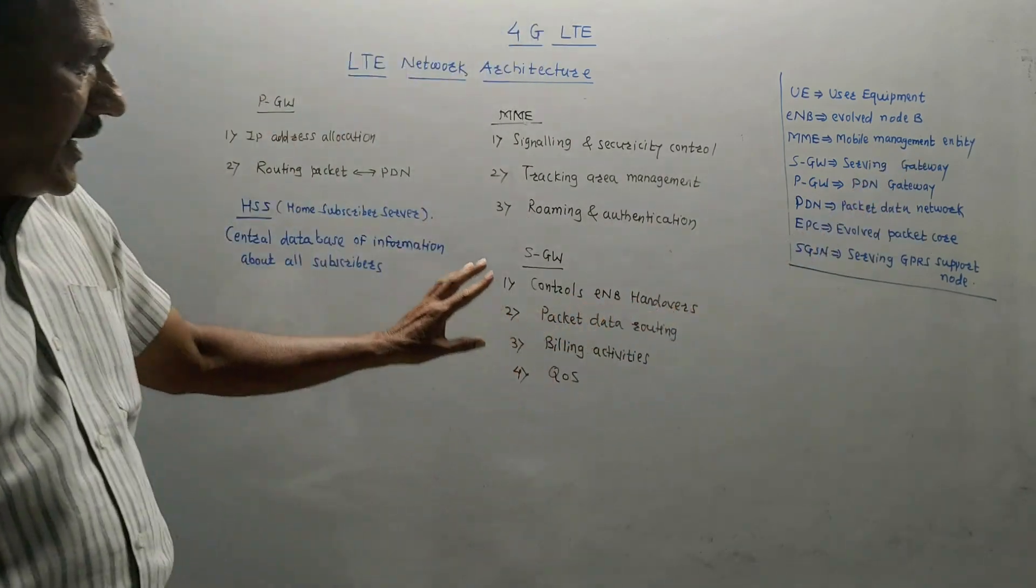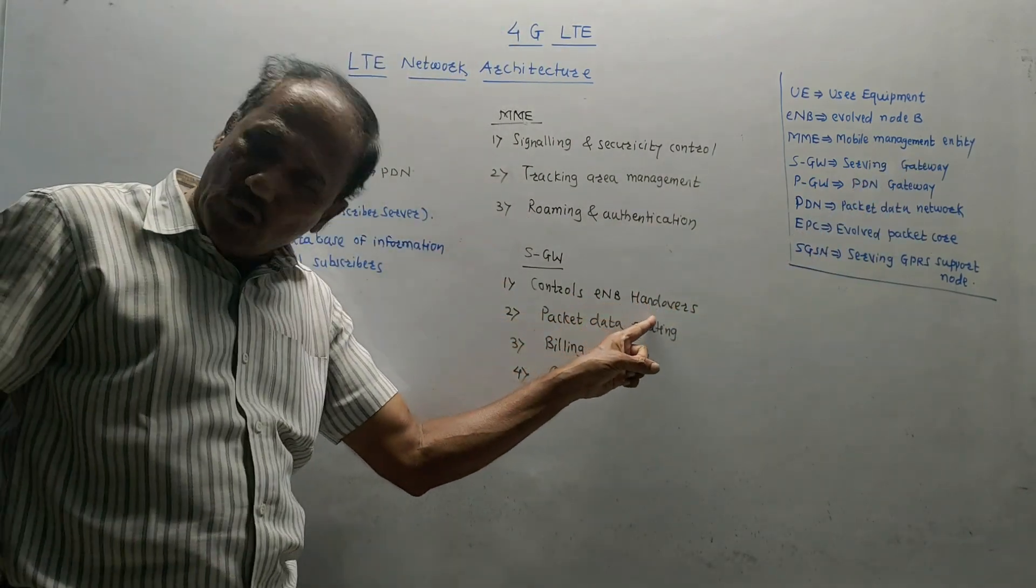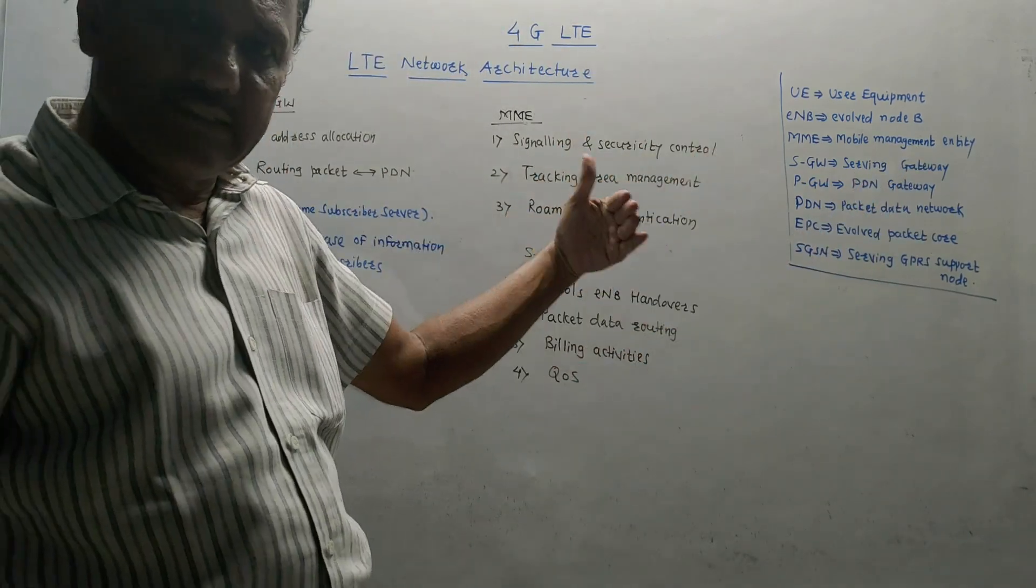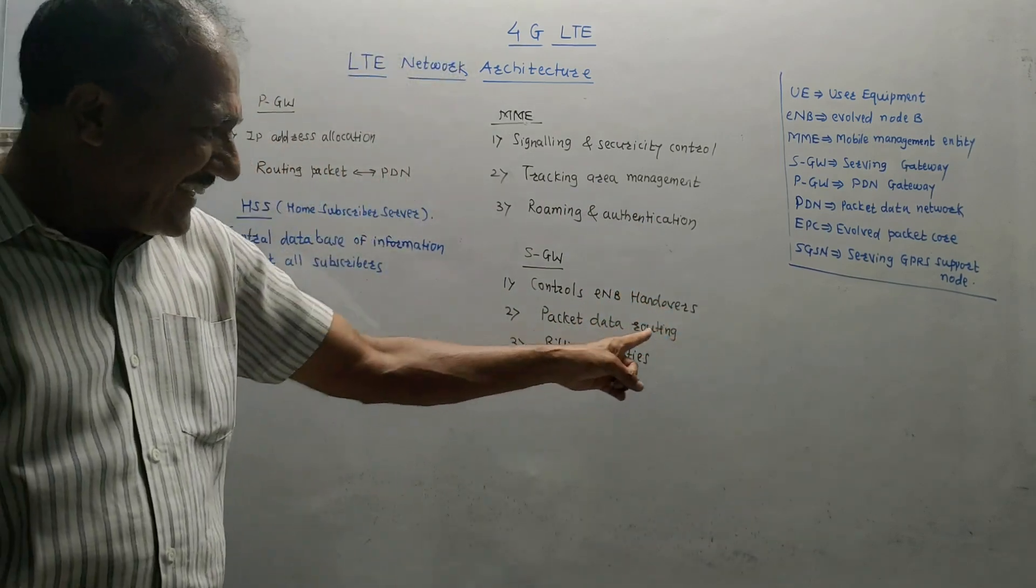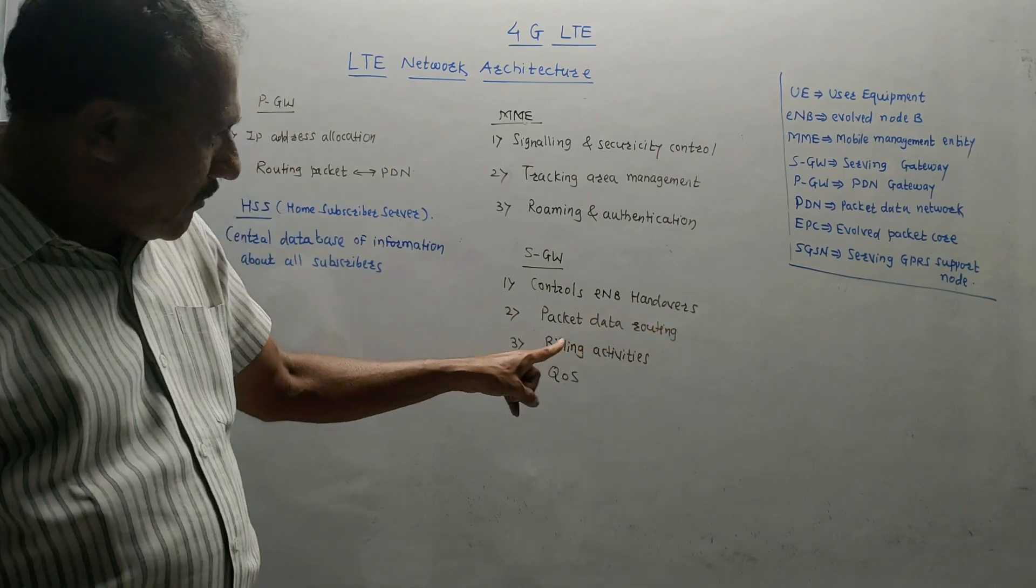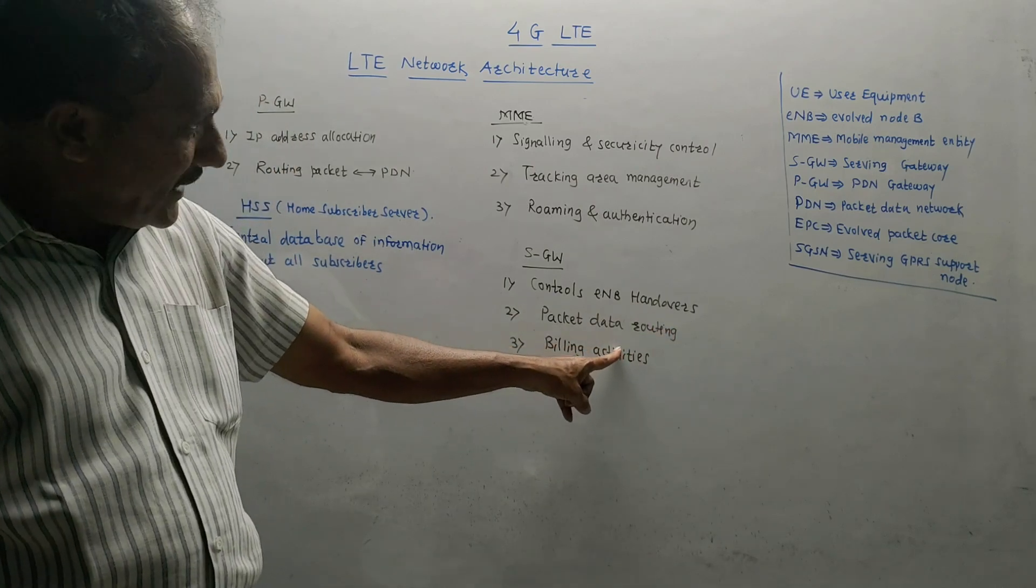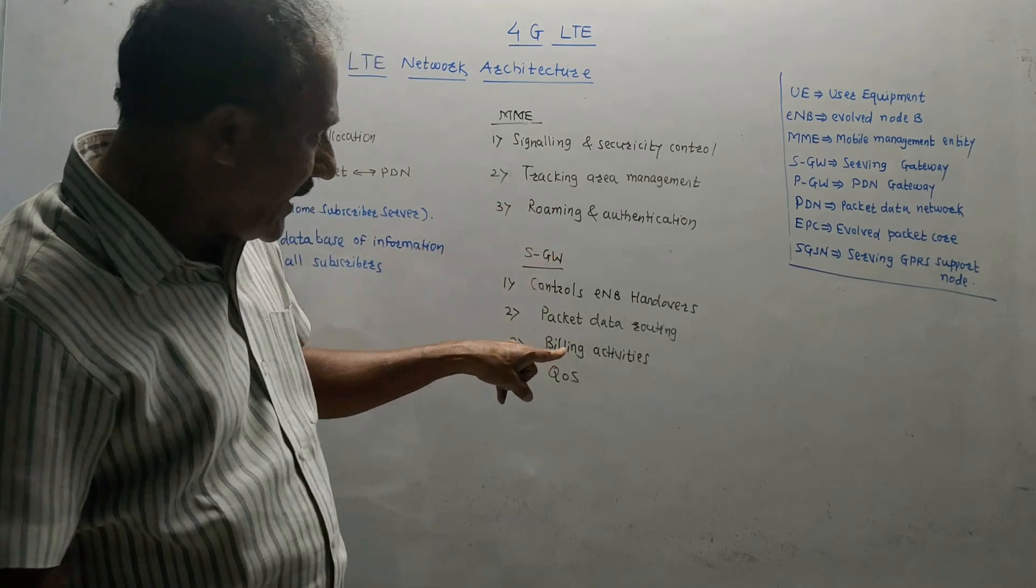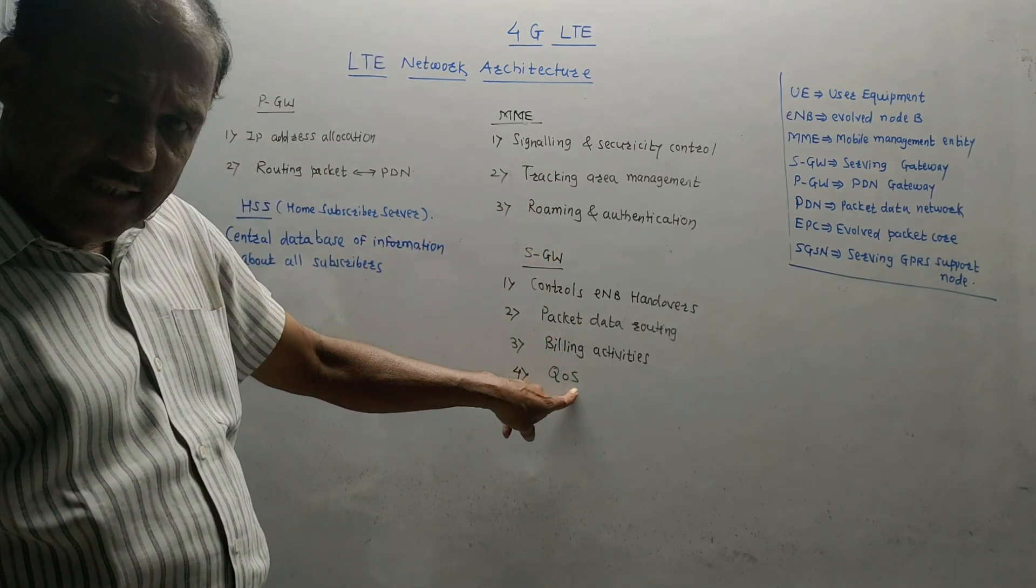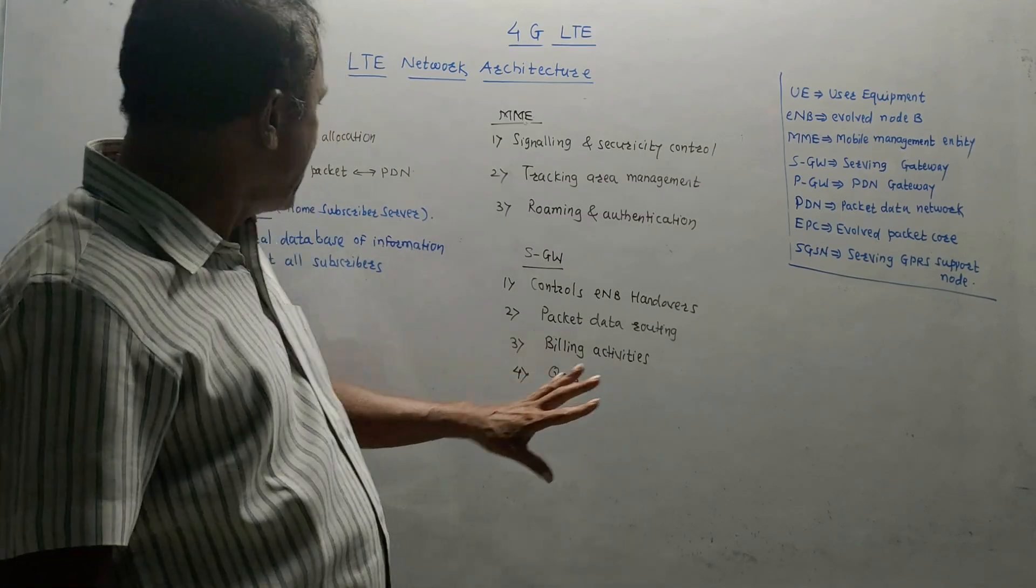Then SGW, that is serving gateway. It controls ENB handovers. We have already discussed the concept of handover in detail in earlier videos. Then packet data routing and billing activities. All billing activities are controlled by this serving gateway. Also QoS, that is quality of service.